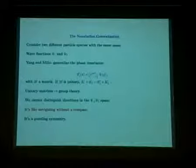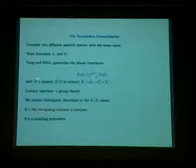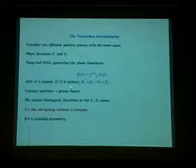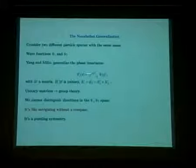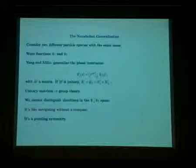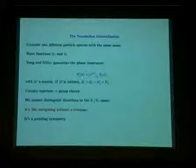I'd like to give a slightly offbeat picture of what this non-abelian generalization of the phase invariance means. We consider two different particle species which have the same mass and are otherwise completely indistinguishable, except that it is declared that there are two of them. There are two wave functions, psi 1 and psi 2, which describe indistinguishable particles. What Yang and Mills said was: in that system of two wave functions, there is another symmetry, and that symmetry mixes the wave functions. It doesn't only change the phase of one of the wave functions, or both of them independently, but actually turns the one into the other.